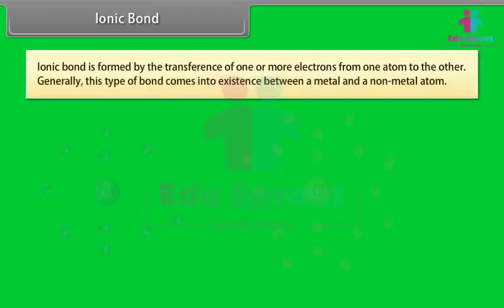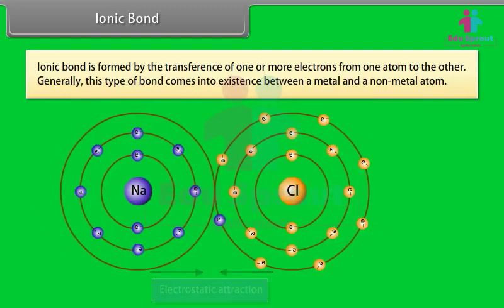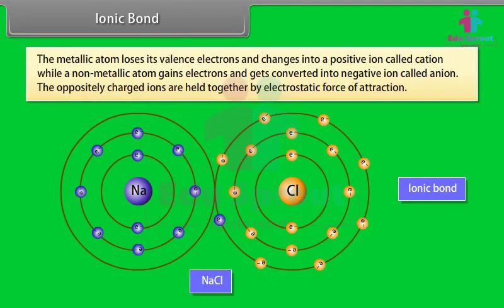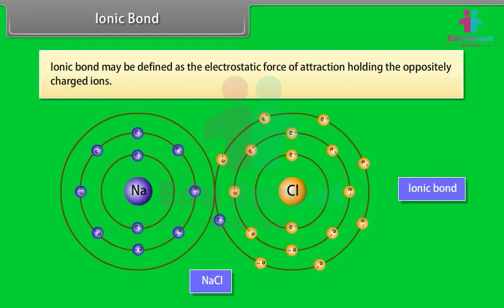An ionic bond is formed by the transference of one or more electrons from one atom to another. Generally, this type of bond exists between a metal and a non-metal atom. The metallic atom loses its valency electrons and changes into a positive ion called a cation, while a non-metallic atom gains electrons and is converted into a negative ion called an anion. The oppositely charged ions are held together by electrostatic force of attraction.